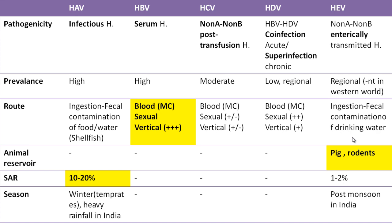All are exclusively human infections except hepatitis E virus, which has an animal reservoir. The secondary attack rate is very high for hepatitis A at 10–20%, while it is just 1–2% for hepatitis E. In temperate countries, hepatitis A is usually found in winters, but in India both A and E are found very commonly post-monsoon.